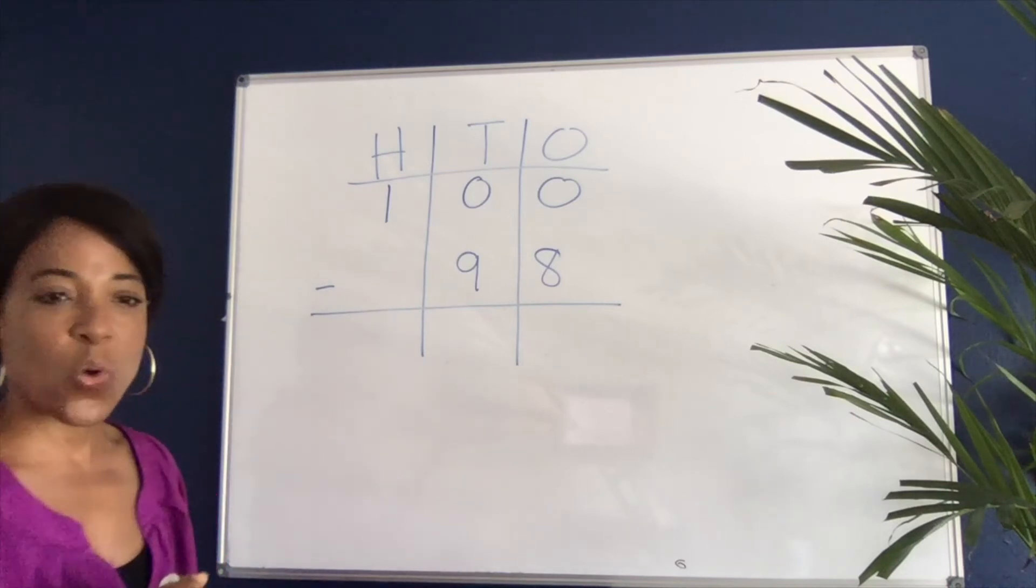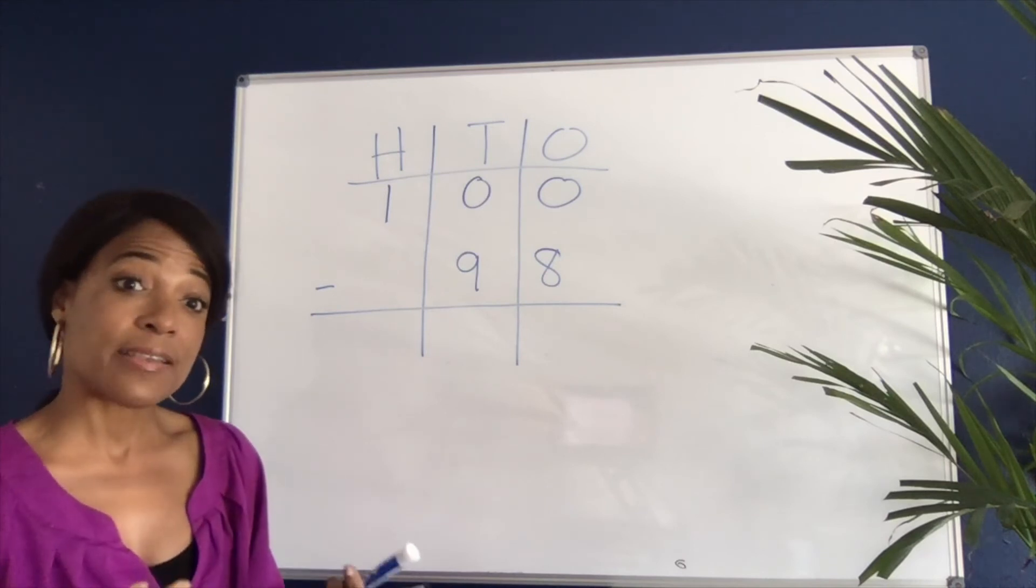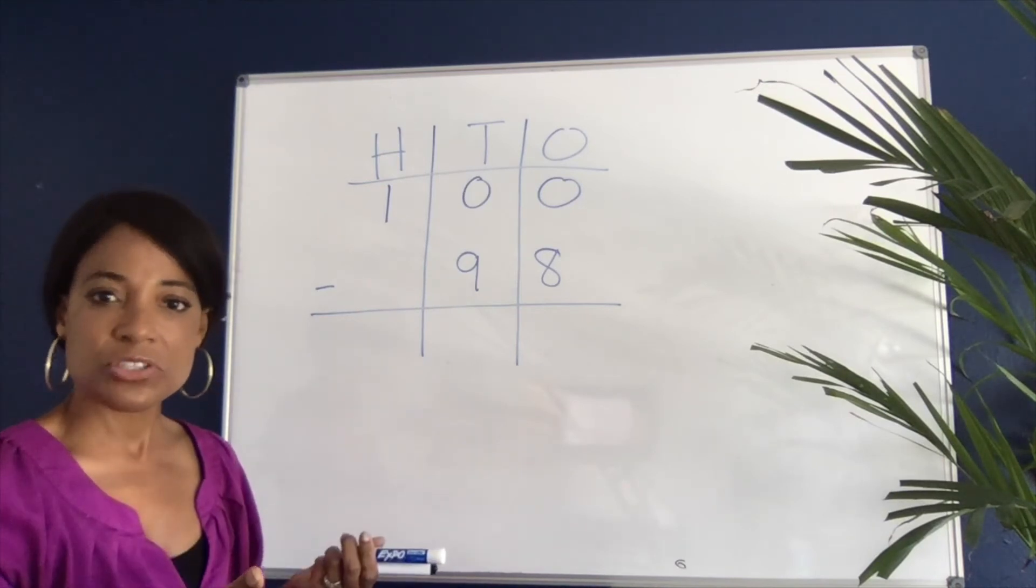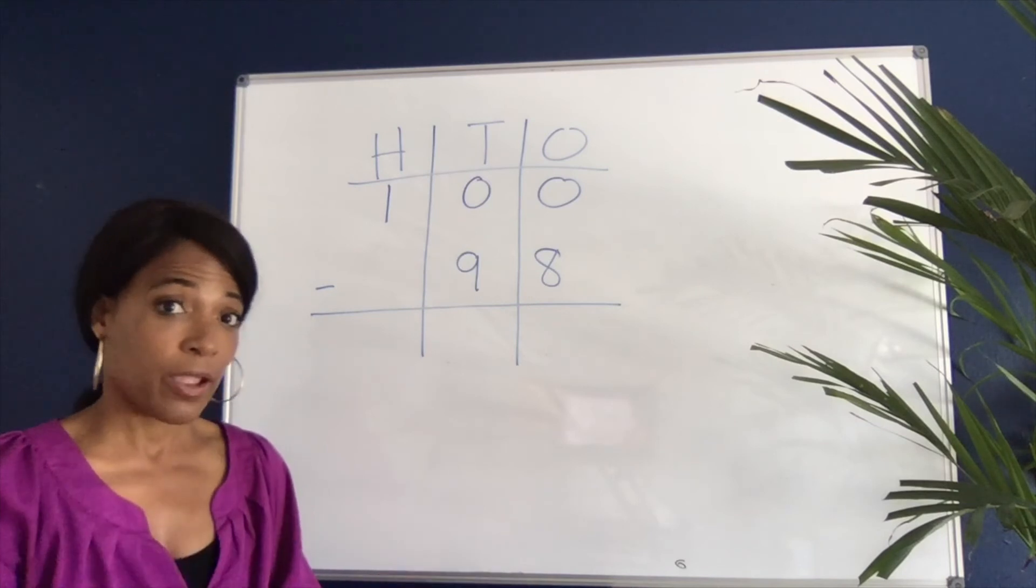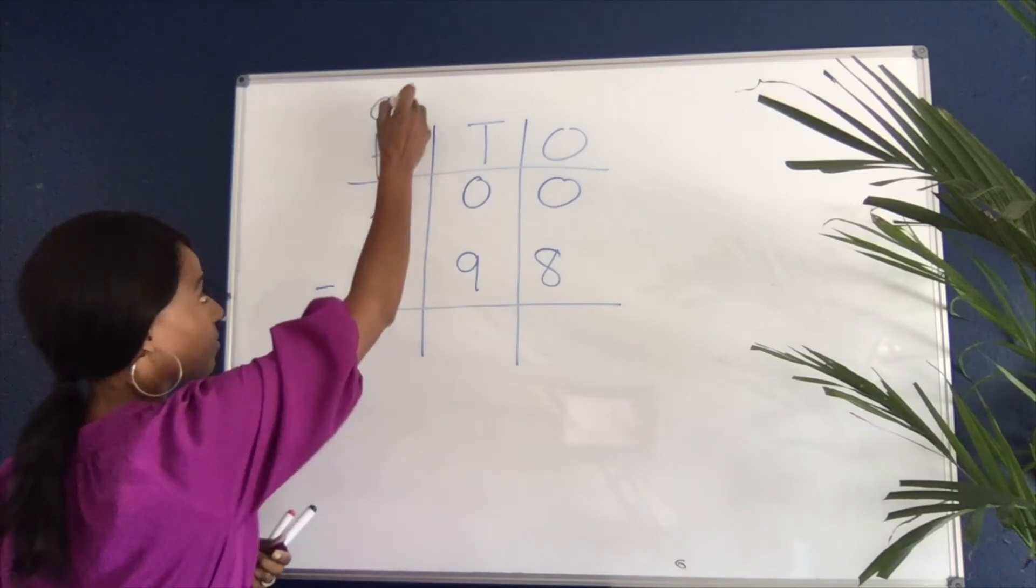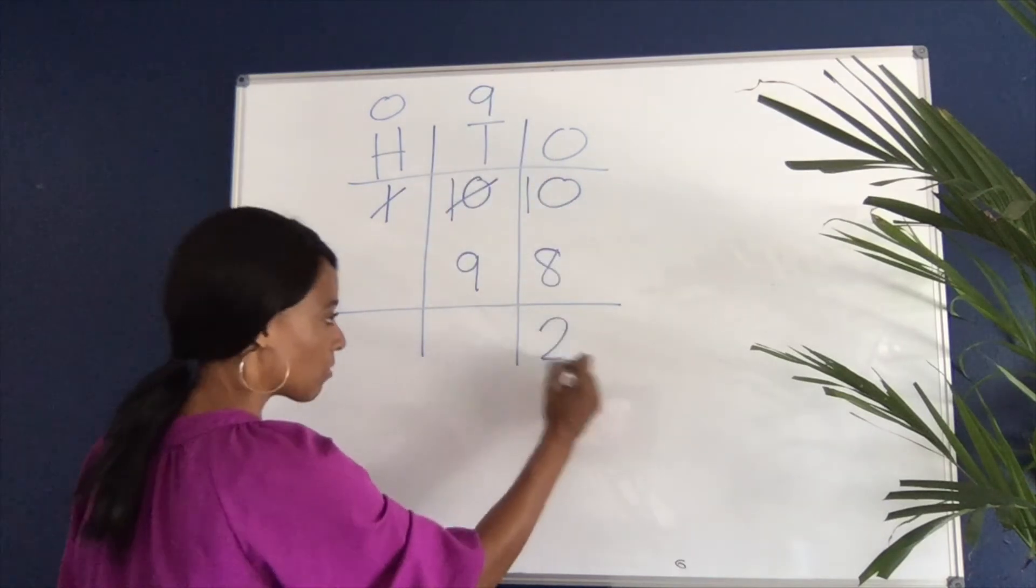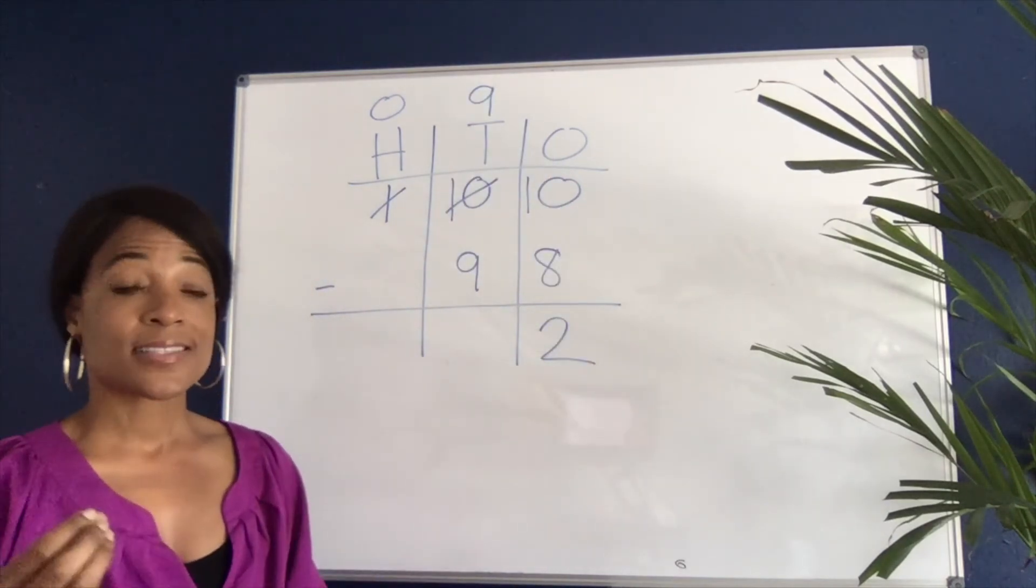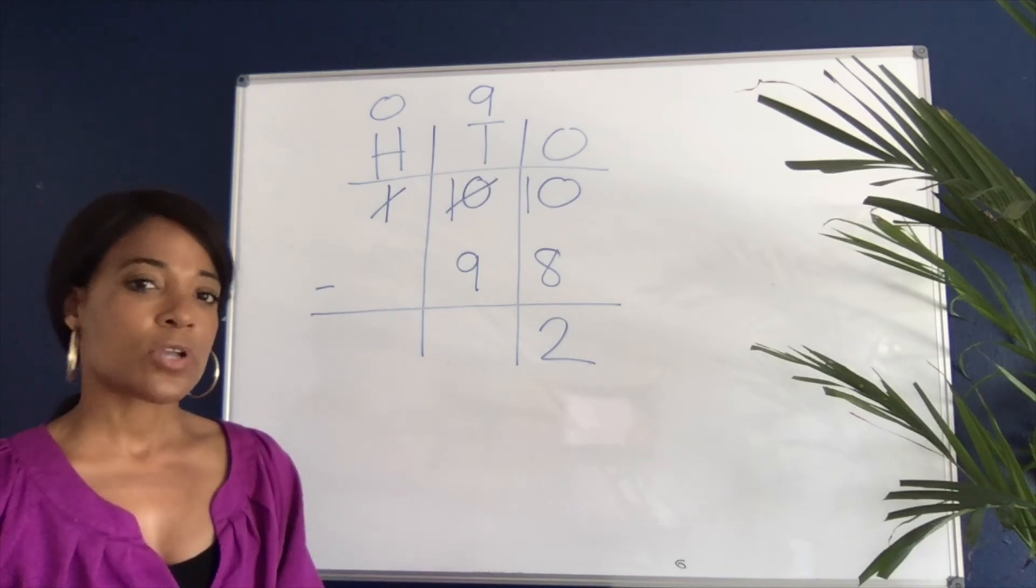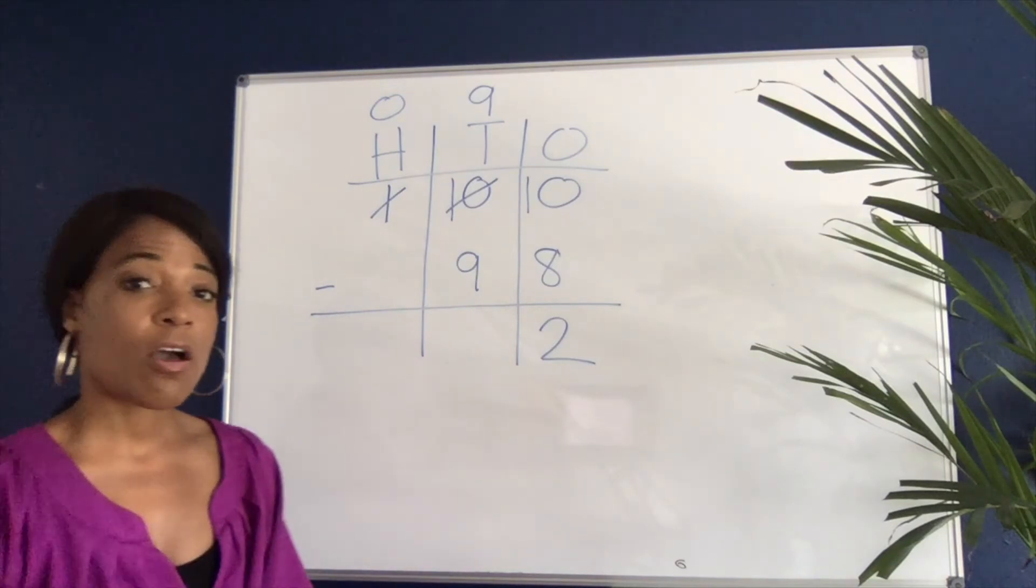In this case we have 100 minus 98. If they've been in the practice of using numbers in friendly ways and staying away from this, they can look at these numbers and say, 'Oh, it's only two away, the answer is two.' But if they're on automatic and trained to use this procedure all the time, they're going to cross off the one, make it a zero, make that a 10—that's a lot of steps for a very simple problem and it leaves a lot of room for error.